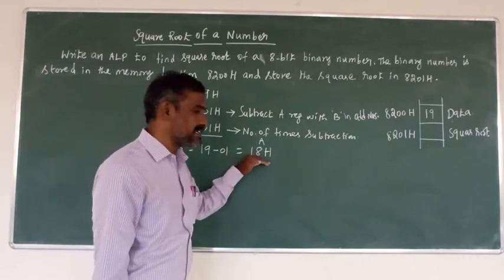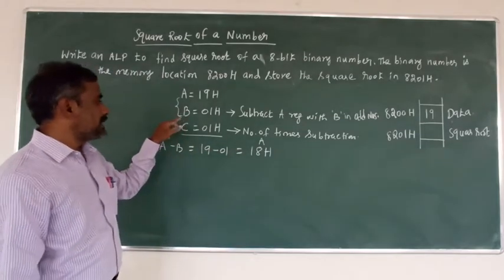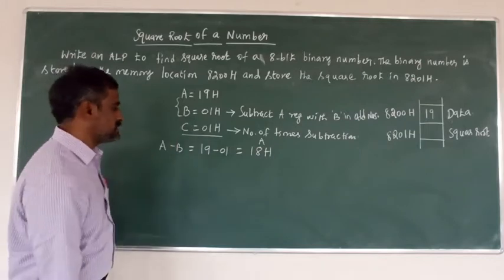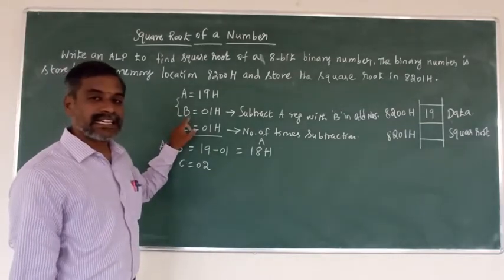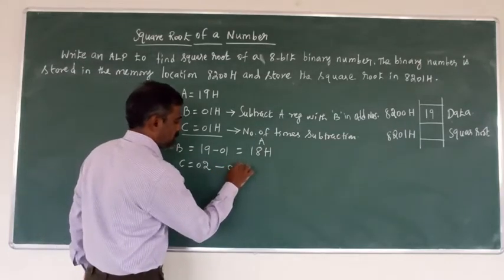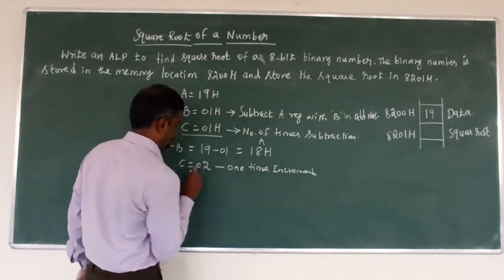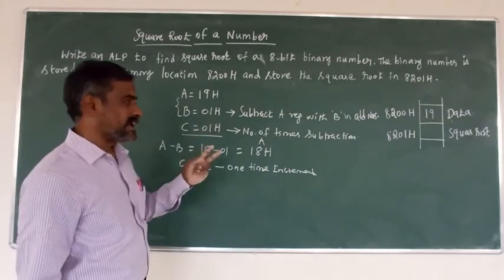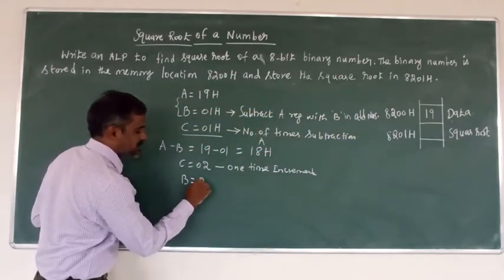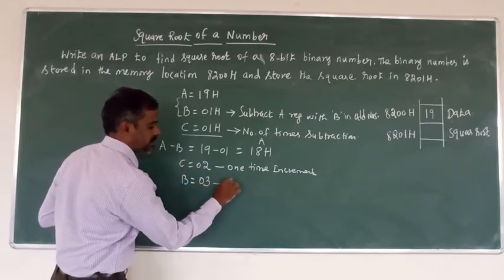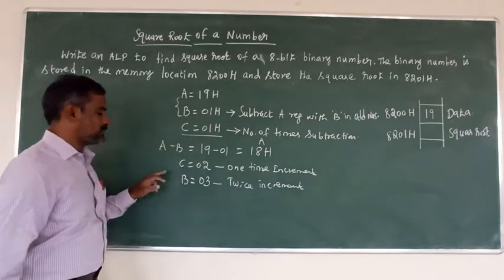Now check the result in the A register — whether it is 0 or not. Result is not 0. No 0 means: increment the C register content once — C becomes 02. And increment the B register content twice. Why? Because we subtract with odd numbers, so B must go to the next odd number. B increments twice, so B becomes 03.